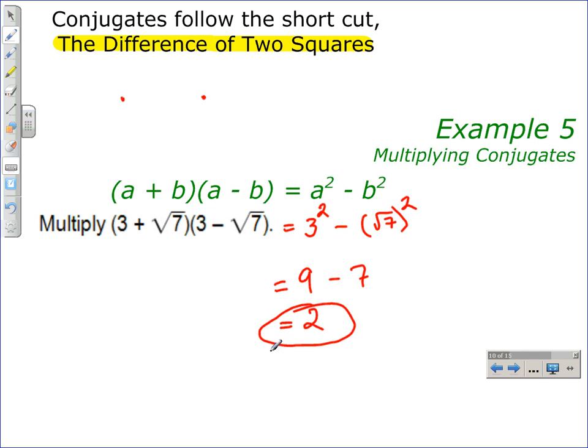Remember when multiplying two conjugates, all you have to do is square the first term and square the second term, and then subtract.